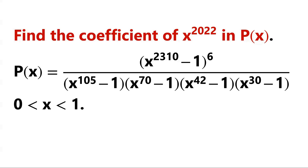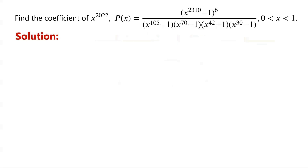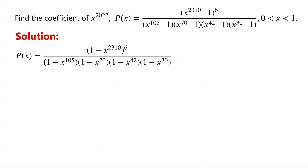P of X is a polynomial with integer coefficients, and X is greater than 0 and less than 1. Find the coefficient of X to the power of 2022 in P of X. The numerator X to the power of 2310, all to the power of 6, equals 1 minus X to the power of 2310, all to the power of 6. Multiplying each factor in the denominator by negative 1 does not change its value. So P of X can be written as: 1 minus X to the power of 2310, all to the power of 6, over (1 minus X to the power of 105) times (1 minus X to the power of 70) times (1 minus X to the power of 42) times (1 minus X to the power of 30).